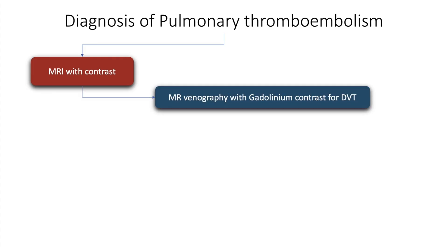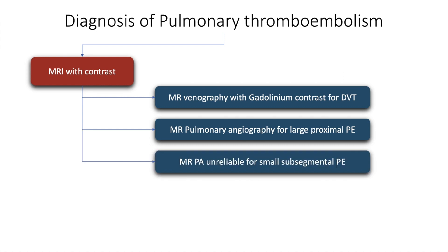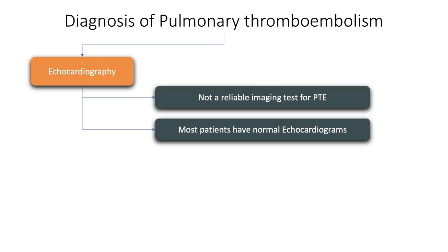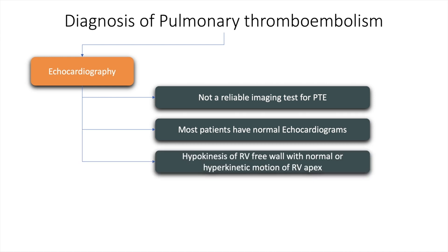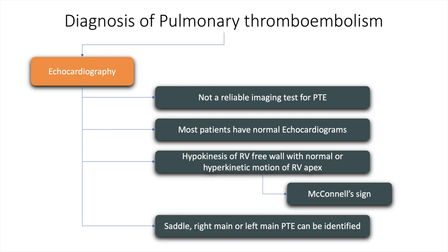Magnetic resonance imaging with gadolinium contrast may be used for deep vein thrombosis. Magnetic resonance pulmonary angiography may be used for large proximal PE, but is unreliable for small sub-segmental pulmonary embolism. The echocardiogram is a poor test for PTE and most patients have normal echocardiograms; however, in some patients, hypokinesis of the right ventricular free wall with normal or hyperkinetic motion of the right ventricular apex may be seen — this is called the McConnell sign. A saddle thrombus or thrombus in the right or left main pulmonary artery can also be identified with the echocardiogram.